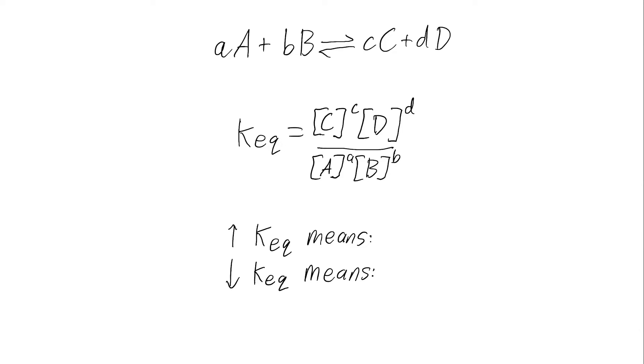For example, if you have a high equilibrium constant, that means that it lies largely on the side of the products.